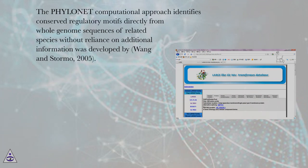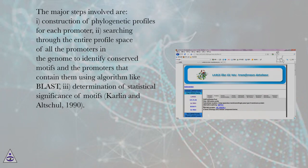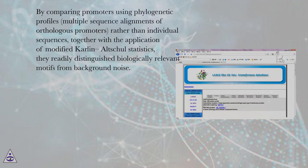The Footprinter computational approach, which identifies conserved regulatory motifs directly from whole genome sequences of related species without reliance on additional information, was developed by Wing and Stormo, 2005. The major steps involved are: (1) construction of phylogenetic profiles for each promoter; (2) searching through the entire profile space of all promoters in the genome to identify conserved motifs and the promoters that contain them using an algorithm like BLAST; and (3) determination of statistical significance of motifs using Karlin-Altschul statistics (1990). By comparing promoters using phylogenetic profiles — multiple sequence alignments of orthologous promoters rather than individual sequences — together with the application of modified Karlin-Altschul statistics, they readily distinguished biologically relevant motifs from background noise.